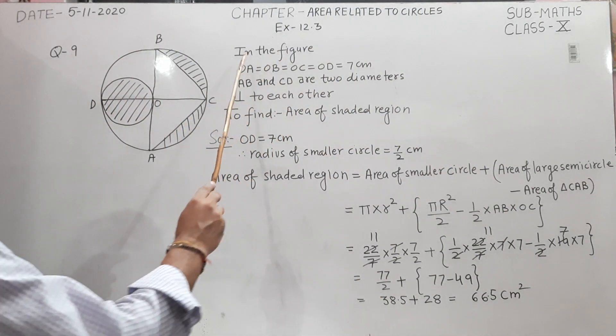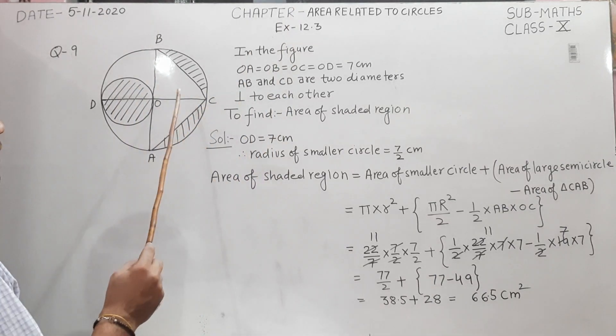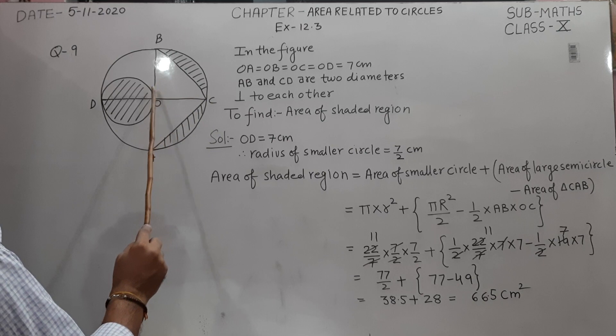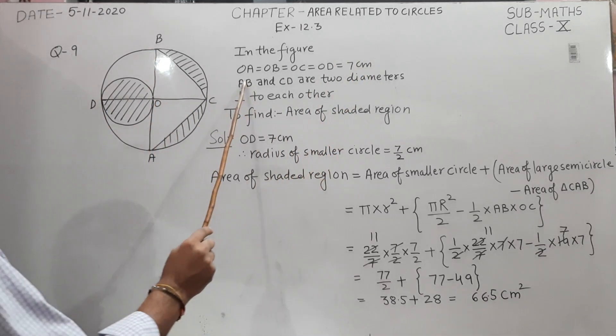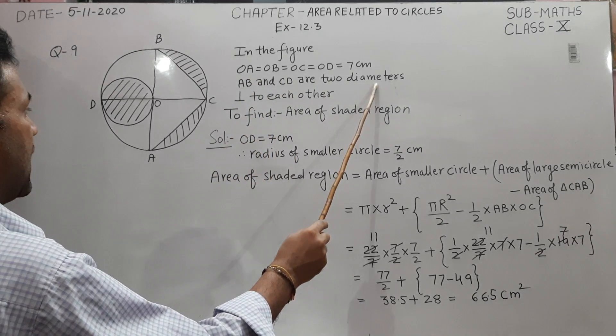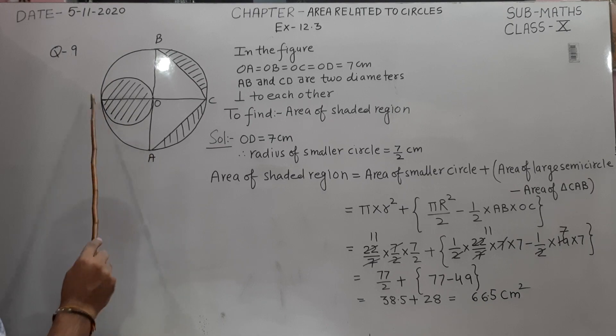In the given figure, the radius of the larger circle—that is OC, OB, OA, and OD—are 7 cm. AB and CD are two diameters perpendicular to each other.